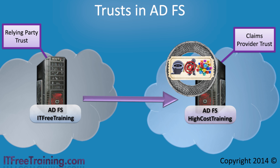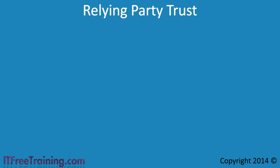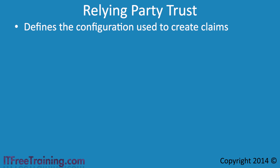If you were to create the Relying Party Trust on the HighCostTraining side, the claim has already been created and cannot be changed afterwards. When HighCostTraining is given a claim, it has to make use of what has been included in it. It cannot ask for additional information afterwards — any information it needs must be put into the claim. If you are a bit confused by this, it should all start making sense soon. If you look at what a Relying Party Trust achieves, it essentially is the configuration used to create claims.